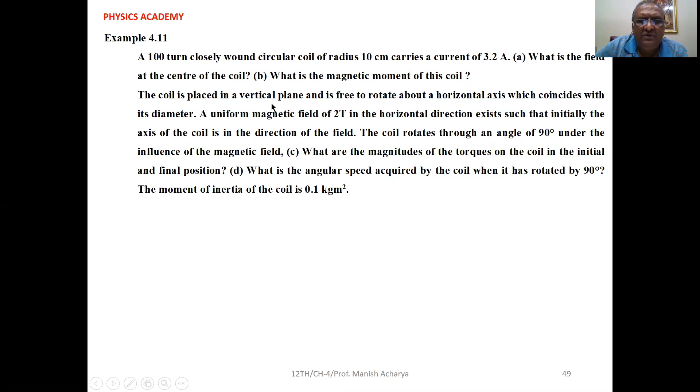The coil is placed in a vertical plane and is free to rotate about a horizontal axis which coincides with its diameter. A uniform magnetic field of 2 tesla in the horizontal direction exists such that initially the axis of the coil is in the direction of the field.